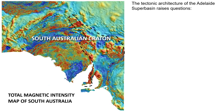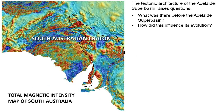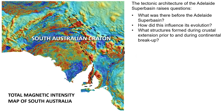This raises some questions. What was there before the Adelaide Superbasin? How did that influence its evolution? And what structures were formed during crustal extension prior to and also during continental breakup?